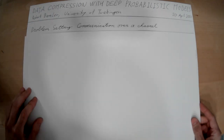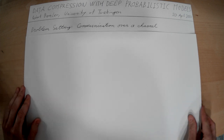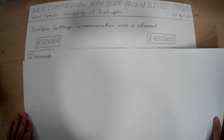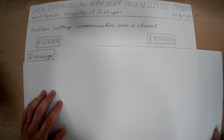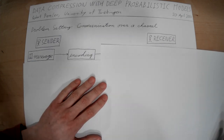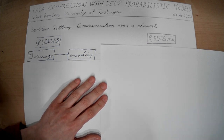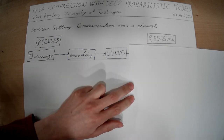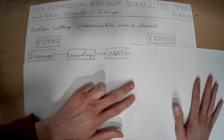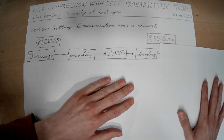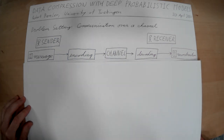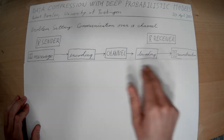The problem we'll be dealing with is that of communication over a channel. We have two parties, a sender and a receiver. The sender has some message and they want to send it to the receiver. To do that, they first encode the message — some transformation — then send it through what we call a channel. The receiver takes the output of the channel and inverts the encoding step, called decoding, which outputs a reconstruction of the original message.